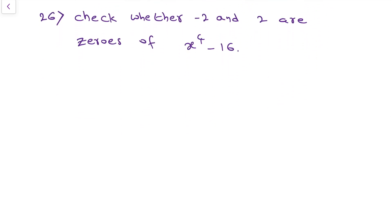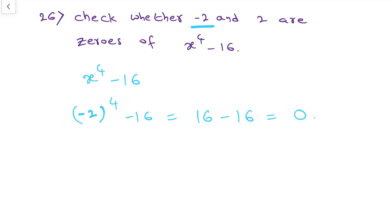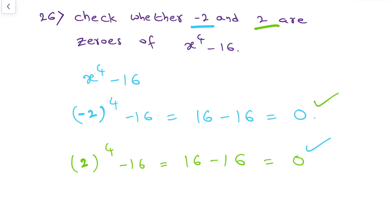Check whether minus 2 and plus 2 are zeros of x power 4 minus 16. Substituting minus 2: minus 2 power 4 minus 16. Minus 2 to the power 4 is minus 2 into minus 2 into minus 2 into minus 2, which is 16. So 16 minus 16 is 0. Since we got 0, minus 2 is a zero of the polynomial. Now substituting plus 2: 2 power 4 is 16, minus 16 equals 0. So 2 is also a zero. Therefore, both minus 2 and plus 2 are zeros of x power 4 minus 16.